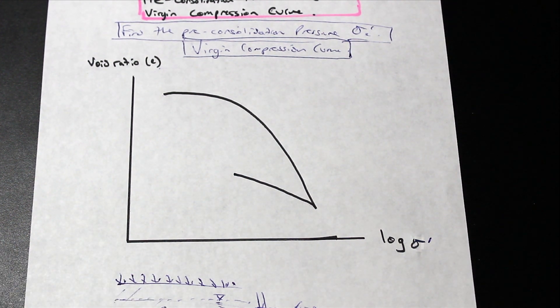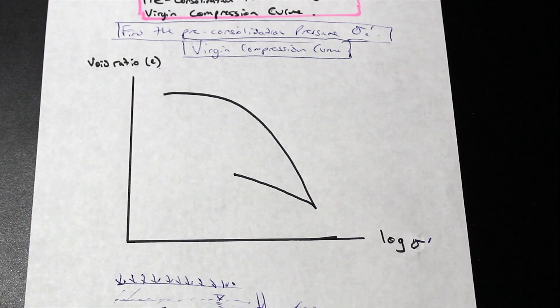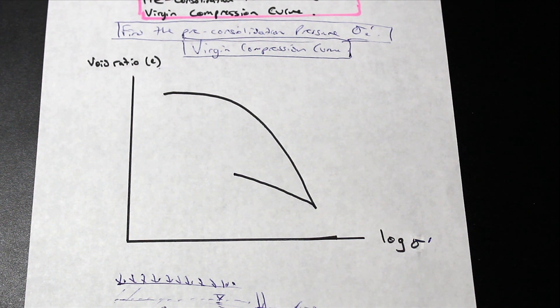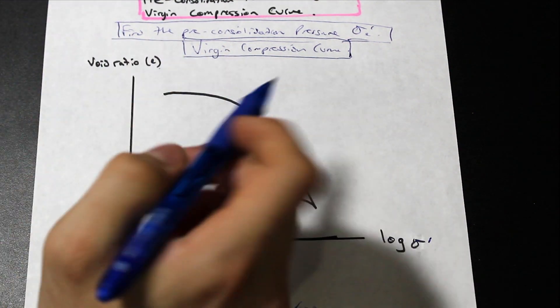So it's actually a graphical method, and it's called the Casagrande method. And how we're going to solve that is pretty simple. So you'll probably be given this, and I'll show you the steps. So there's five steps. The first thing that we're going to do is we're going to find by eye what you think to be